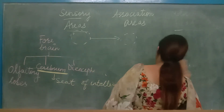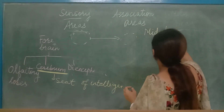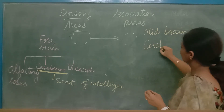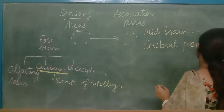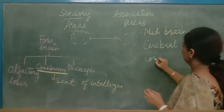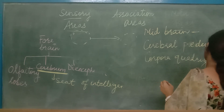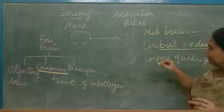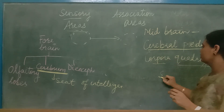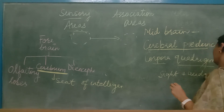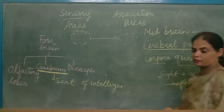Now the midbrain consists of cerebral peduncles and the corpora quadrigemina. The cerebral peduncles are fibers that connect the forebrain with the midbrain. The corpora quadrigemina controls the sight and auditory reflexes of the body.